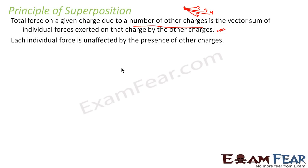Each individual force is unaffected by the presence of the other charges. That means the force on charge 1 due to charge 2 is independent of how many other charges are present. So if there are 20 charges present, the force exerted on a particular charge due to some other charge is not dependent on the other 18 charges which are present there.